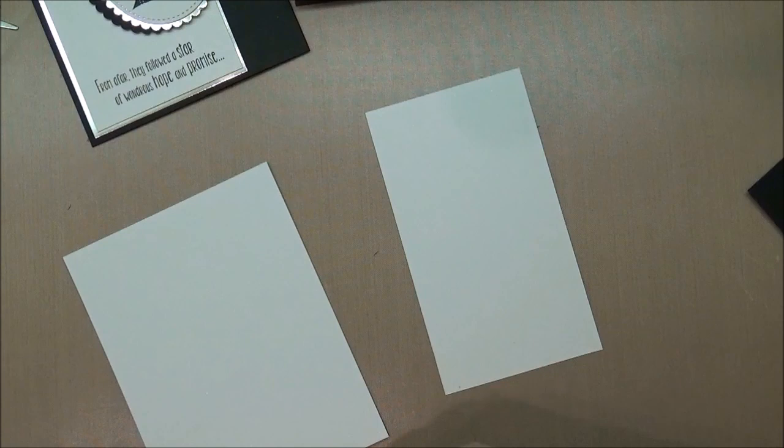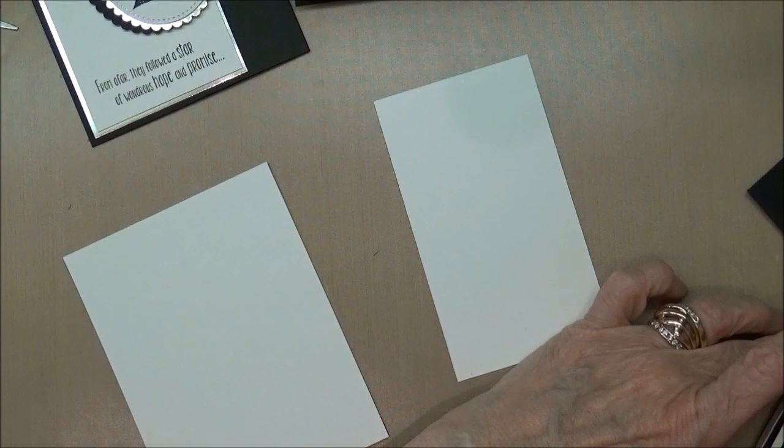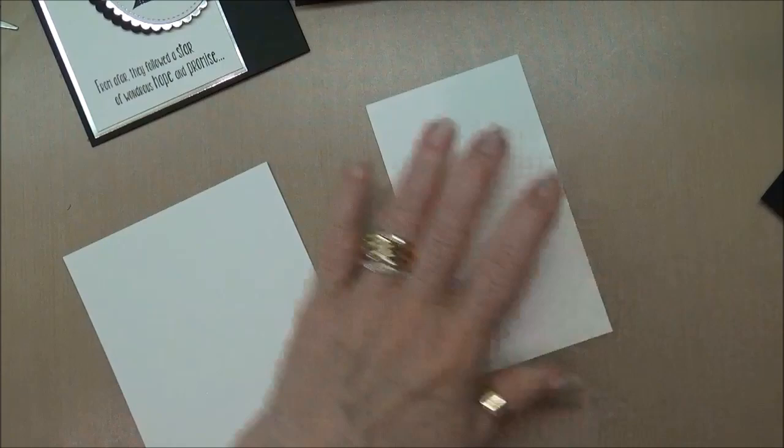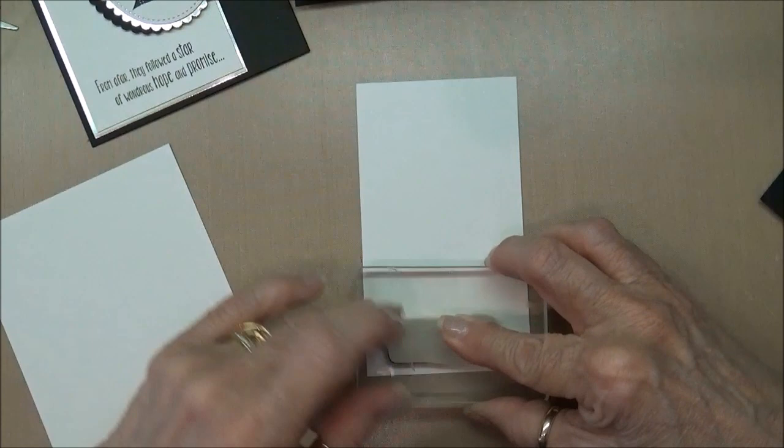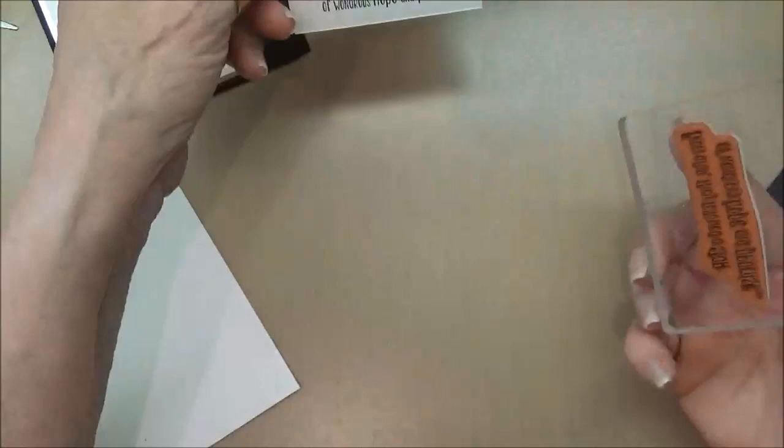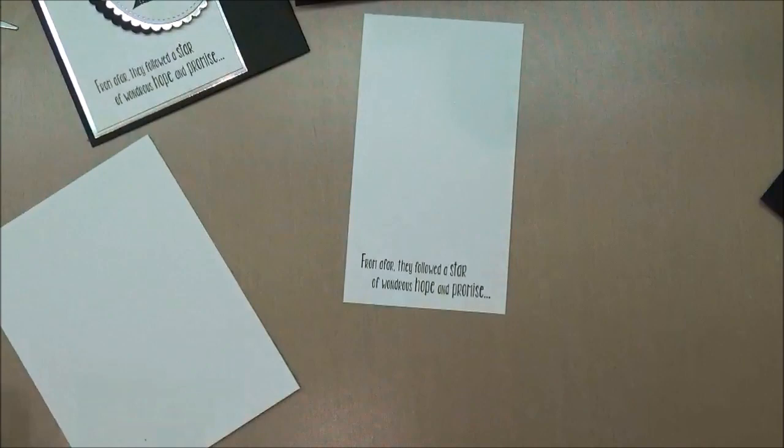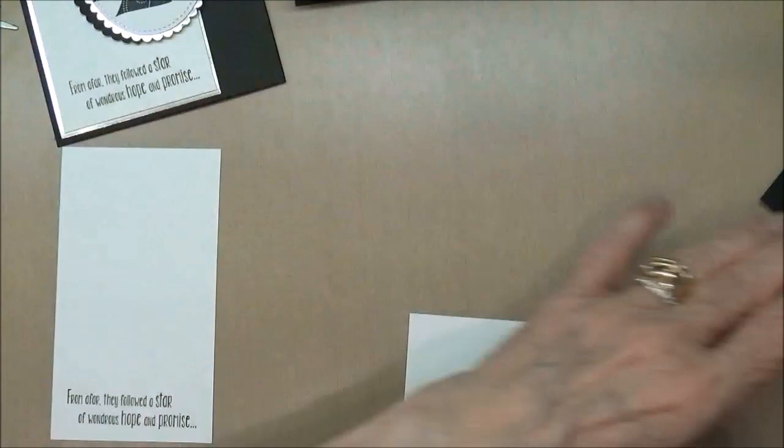So the first thing that we're going to do is take the from afar sentiment and we'll ink that up and that's going to be stamped right here on the bottom. All right that came out straight, you never know sometimes, and now we'll go ahead and we'll stamp our sentiment on the inside.